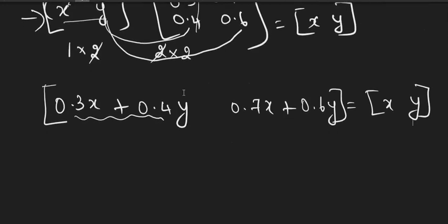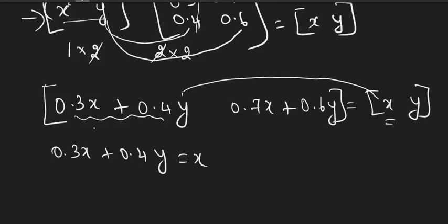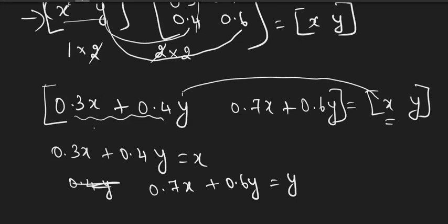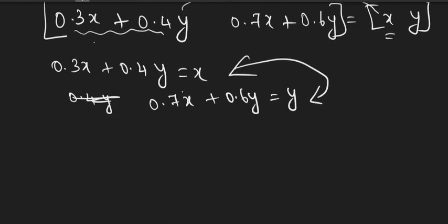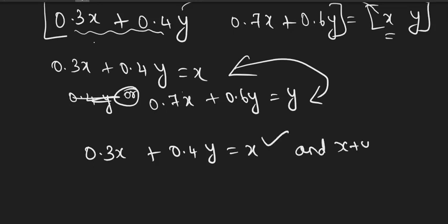You will get two equations but you are not going to solve both — the left-hand side should equal the right-hand side. So equation one: 0.3X plus 0.4Y equals X. Similarly, equation two: 0.7X plus 0.6Y equals Y. You have two equations, but instead of solving both, use the important condition: X plus Y equals 1.